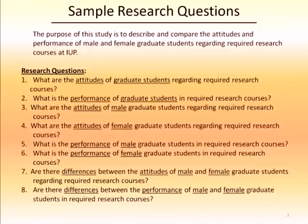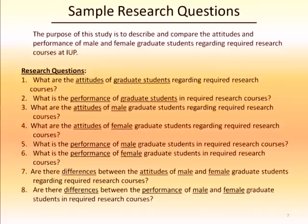Questions three and four ask about the attitudes of males and females separately. In question three we look at attitude data for males, and in question four, attitude data for females. Questions five and six are the same thing with performance data — question five asks about performance data for males and question six for females. Finally, questions seven and eight compare: question seven compares attitude data between males and females, and question eight compares performance data between males and females.